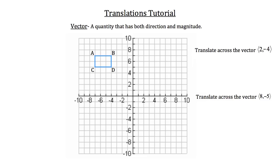In order to translate a figure across a vector, the vector gives the magnitude and direction that we're going to be translating each coordinate point of the rectangle — points A, B, C, D. We're translating the x coordinate of each point positive 2, which is 2 units to the right. And we're translating the y coordinate negative 4, which is 4 units down.